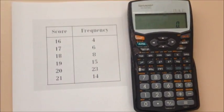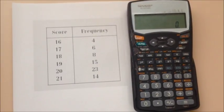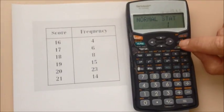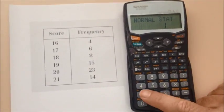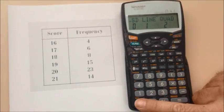To input statistics into your SHARP calculator, first make sure it's on the correct mode. Press the mode button and choose stats by pressing the number one, and SD is the correct mode.